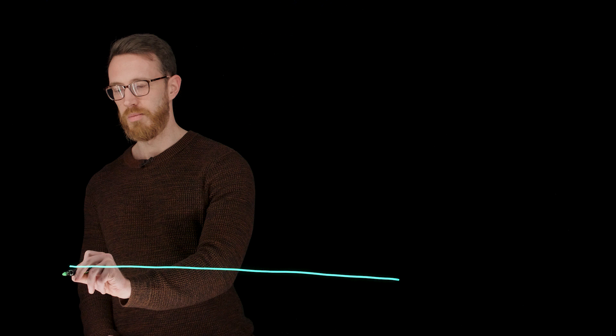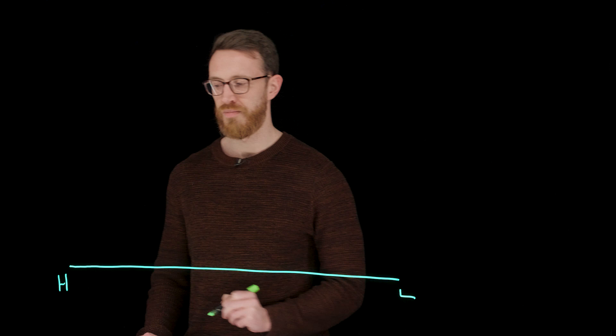On one axis, we might think about the number of customers that a financial services company is serving in a given segment. So we would start down here, and we would go across here, and the number of customers I'm serving here is higher, and the number of customers I'm serving here is lower.